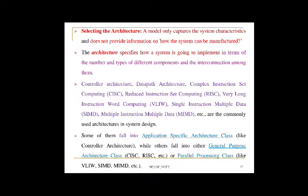RISC architecture uses an instruction set representing simple operations, requiring the execution of multiple RISC instructions to perform a complex operation. The data path of RISC architecture contains a large register file for storing operands and output. The RISC instruction set is designed to operate on registers. RISC architecture supports extensive pipelining.